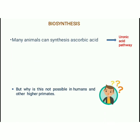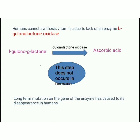Why can humans and other higher primates not synthesize Vitamin C? The reason is that humans cannot synthesize Vitamin C due to lack of an enzyme called L-gulonolactone oxidase — that is, the enzyme required for the last step of the uronic acid pathway. The conversion of L-gulonolactone into ascorbic acid in the presence of this enzyme does not occur in humans. This has happened due to long-term mutation on the gene of this enzyme, which has caused its disappearance in humans.